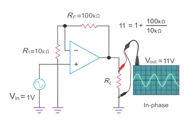Reducing the feedback resistor value RF to 47 kiloohms will yield a gain of 5.7 volts. Increasing the value to 200 kiloohms will yield a gain of 21 volts.